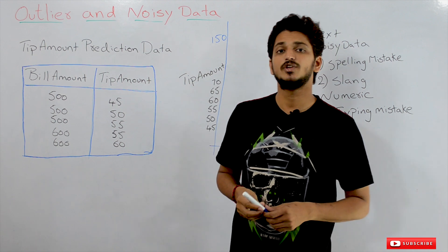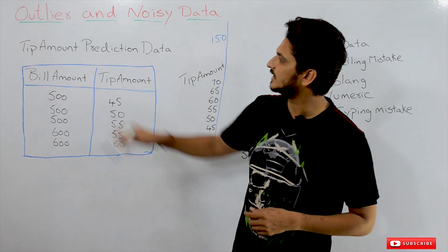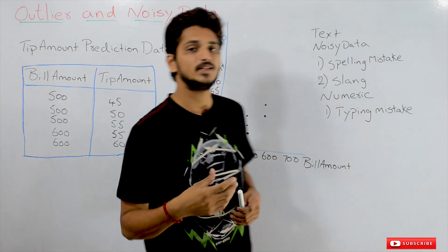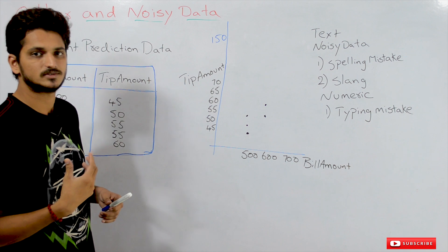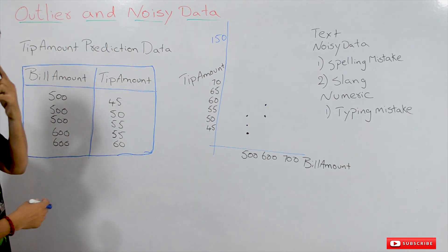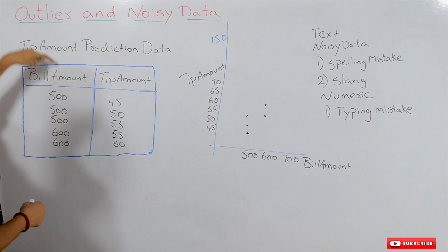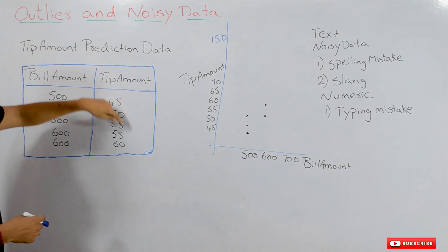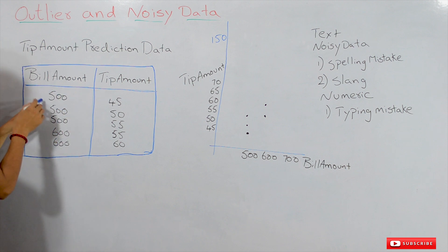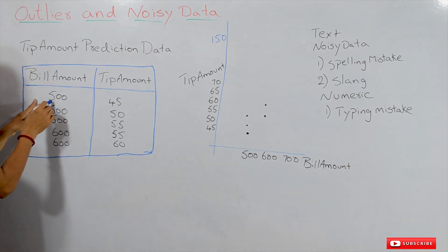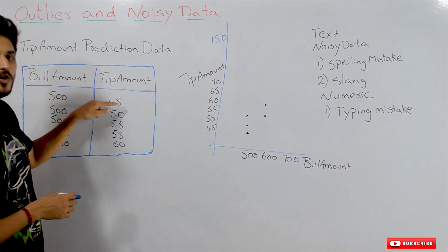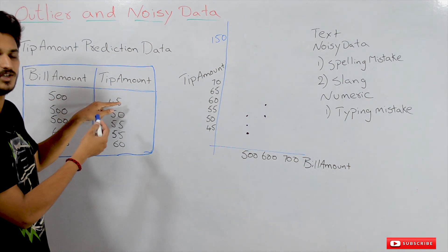The example we consider here is the tip amount prediction dataset. We are following this dataset from the beginning of our classes. This dataset has two columns: one is bill amount and the other is tip amount. For example, one customer came into the restaurant, made a bill amount of 500, and gave a tip amount of 45.